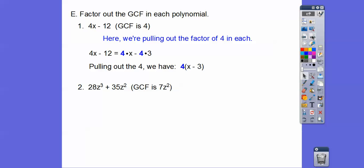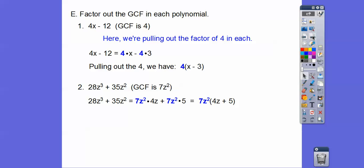The GCF is 7z². Let's rewrite 28z³ as 7z² times something, and 35z² as 7z² times something. 7 times 4 gives us 28, and z² times z gives us z³. And 7z² times 5 gives us 35z². So we pull out the 7z² and we're left with 4z plus 5 inside the parentheses. To check your answer, distribute the 7z² back — it should take you back to the original.